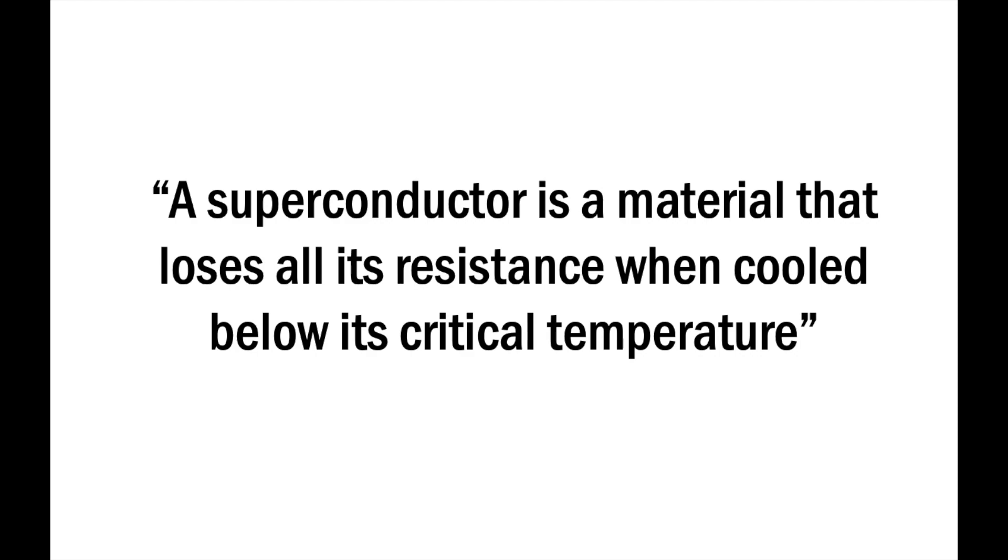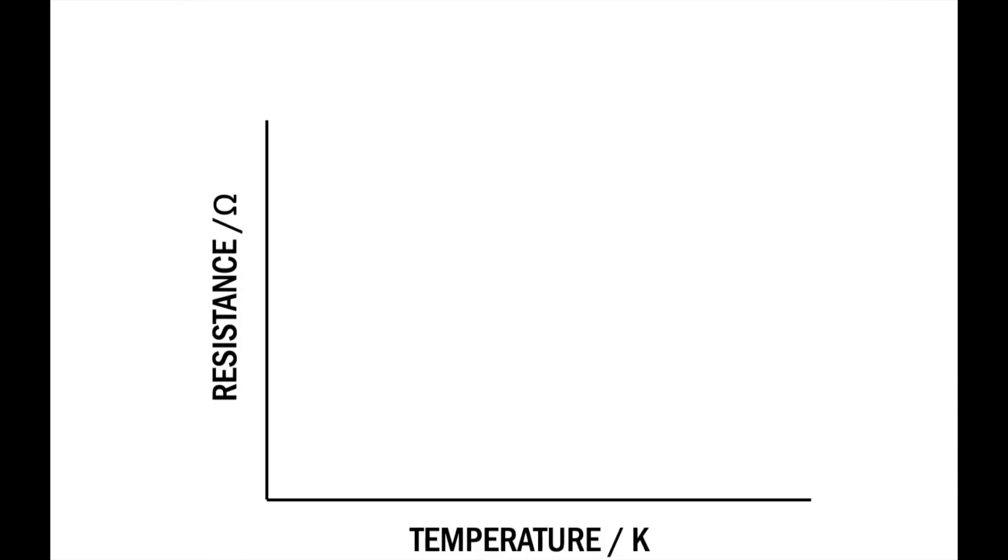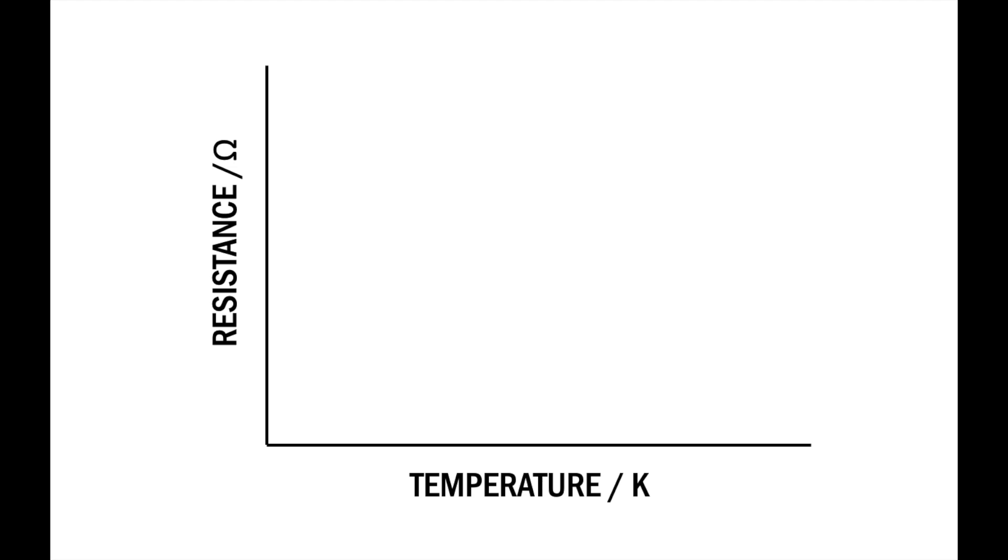In normal conductors, as electrons collide with the vibrating lattice ions, energy is lost as thermal energy. A higher temperature means more vibrations, therefore more resistance, producing a curve like this.